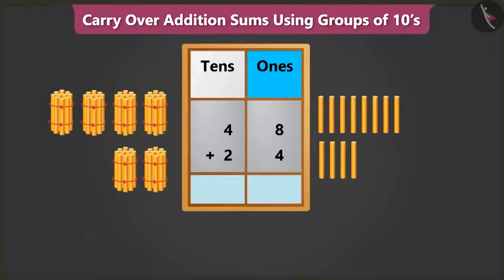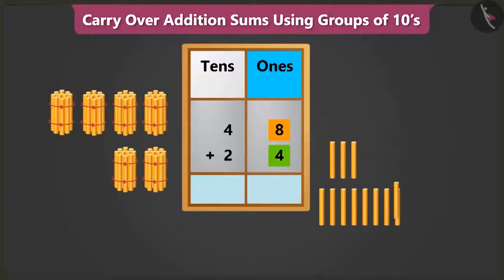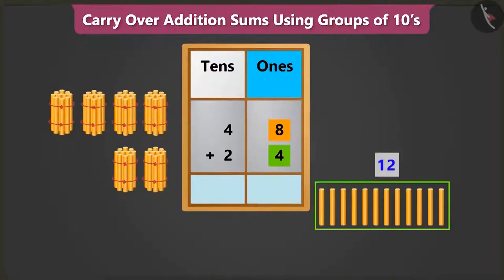First, let's add the numbers in the ones place. We have to add 8 ones to 4 ones. So, count after 8, 9, 10, 11 and 12. This means 8 ones and 4 ones add up to 12 ones.